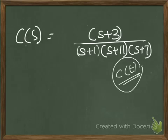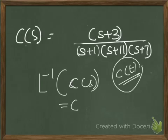Applying the inverse Laplace transform to C(s) will give you c(t). Now, looking at the right-hand side, you have a fraction: (s+3) / [(s+1)(s+11)(s+7)]. First, if you want to apply the inverse Laplace transform, you have to resolve that big fraction into smaller partial fractions.